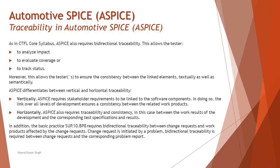In addition, the basic practice SUP.10 — the support process — requires bi-directional traceability between change requests and the work products affected by those change requests. Traceability is not limited to existing work products and test basis. If any modification or revision is made to an entity, that revision should also be mapped to the affected work products. This shows whether existing test cases are sufficient to support the change or whether new test cases are needed. Bi-directional traceability is also required between change requests and the corresponding problem reports, ensuring 100% coverage and that nothing important is missed.